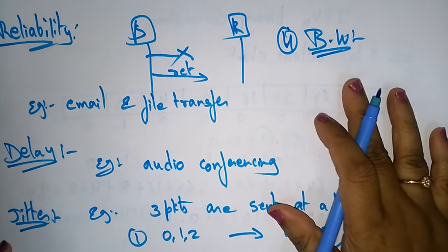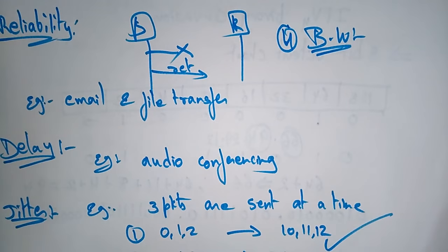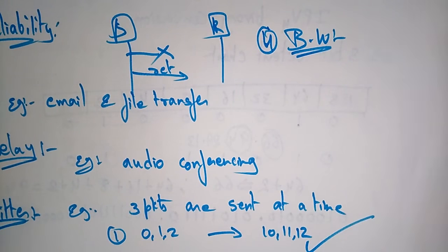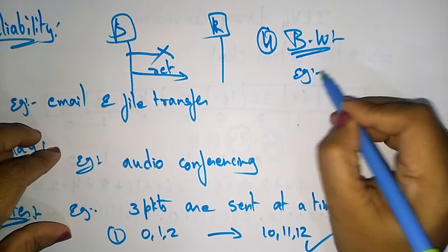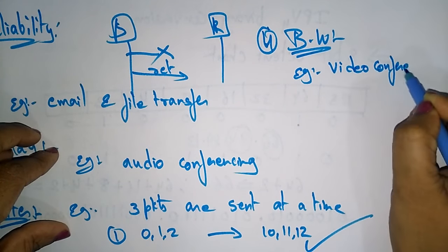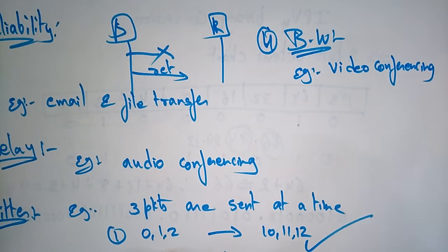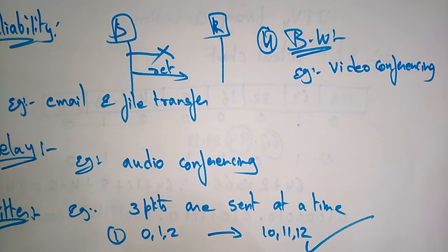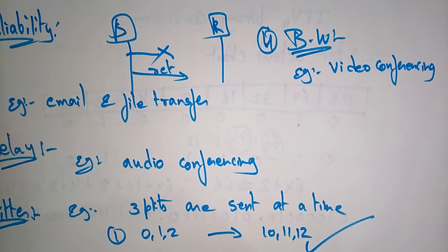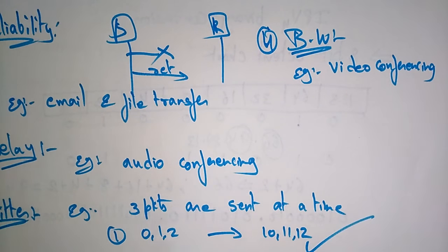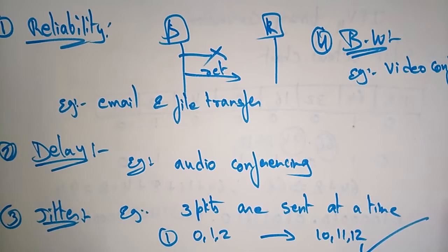The fourth characteristic is bandwidth. Different applications need different bandwidths. For example, video conferencing needs more bandwidth compared to sending email. To send email, less bandwidth is required, but for online video conferencing — like Skype — you need more bandwidth compared to email. So these are the four flow characteristics of Quality of Service: reliability, delay, jitter, and bandwidth.